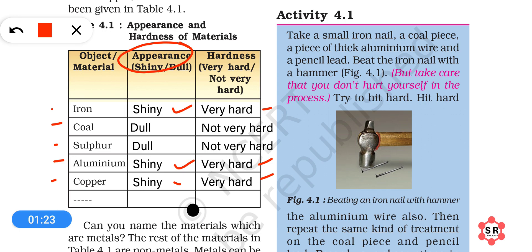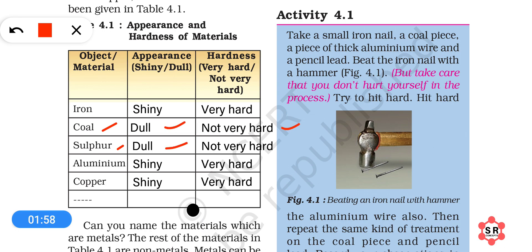You can very easily say that iron, aluminium, and copper are metals. Metals have shiny appearance and they are very hard. But coal and sulphur are opposite in appearance — they have a dull appearance and they are not very hard. Coal and sulphur are non-metals; they have dull appearance, no shine, and are not very hard. So one clear difference is that metals are shiny and hard, while non-metals are dull and not very hard.